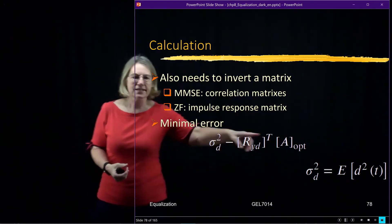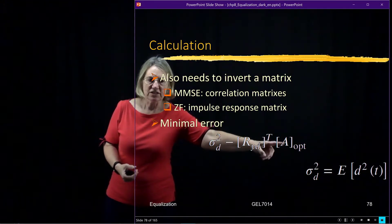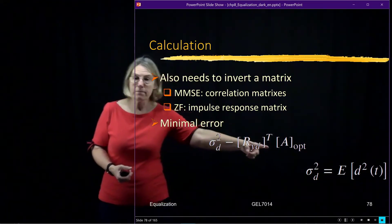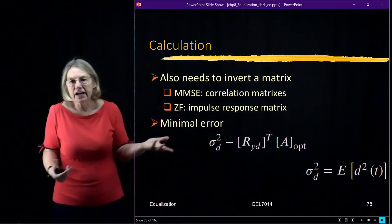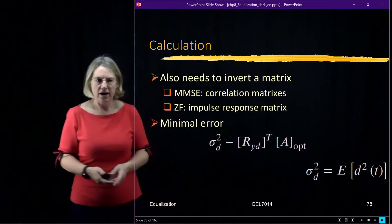So there would be, for any set of coefficients, this would be the mean squared error. And when I get the optimal that minimizes this, this would be the error that I cannot reduce. This is the minimum mean squared error.